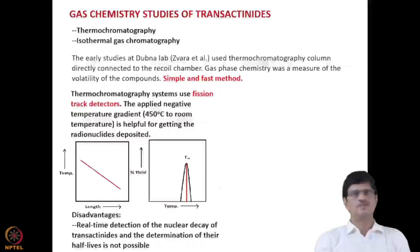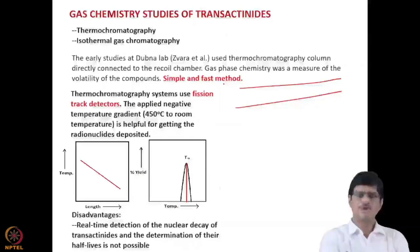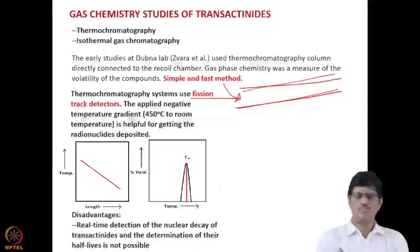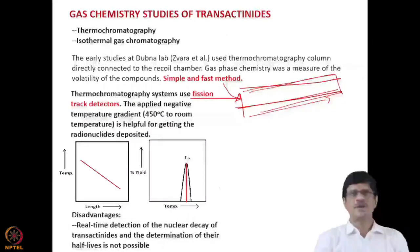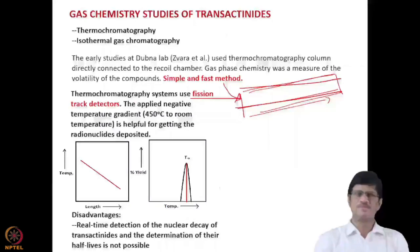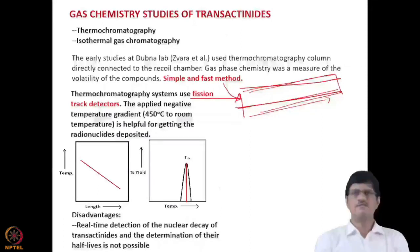In thermochromatography, detection is done by fission track detectors. The column has a temperature gradient from 450°C down to room temperature. Depending on the volatility of the compound, they are deposited at different positions along the column, and fission track detectors implanted on the inner surface allow monitoring of where compounds are deposited. However, real-time detection of nuclear decay of transactinides, as well as their half-life determination, was not possible with this method.